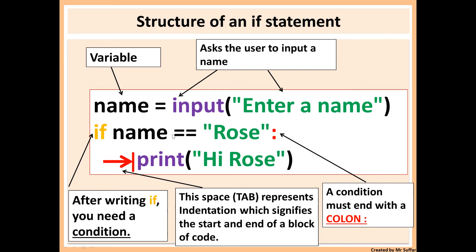After that, on the next line, there is some space. This space is called indentation and it represents a block of code — the start and end of a block. Before you type print, if you want something inside your if statement then it has to be indented; you need to put space before it. You can press tab on your keyboard to add the space — it's about four spaces, but you just press tab. So if I type Rose as the name then it will display 'Hi Rose'. If I type anything else other than Rose it will not display anything.